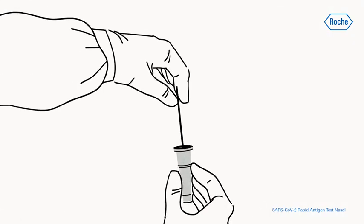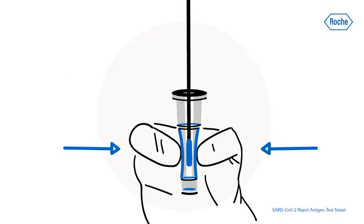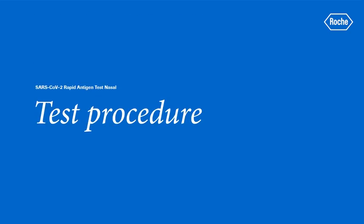Insert the swab into an extraction buffer tube. While squeezing the buffer tube, stir the swab more than 10 times. Remove the swab while squeezing the sides of the tube to extract the liquid from the swab. Press the nozzle cap tightly onto the tube.